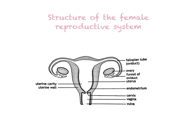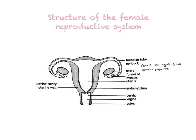The female reproductive system is made up of a pair of ovaries — the right ovary and the left ovary. This is as if you're looking at your own reproductive system. The ovaries are what we call the female sex organs, and they are very important because they secrete two female hormones called estrogen and progesterone.